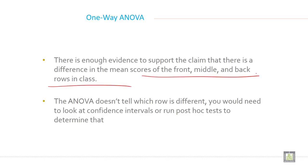The ANOVA does not tell which row is different. This is very important. You would need to look at confidence intervals or run post hoc tests to determine that.